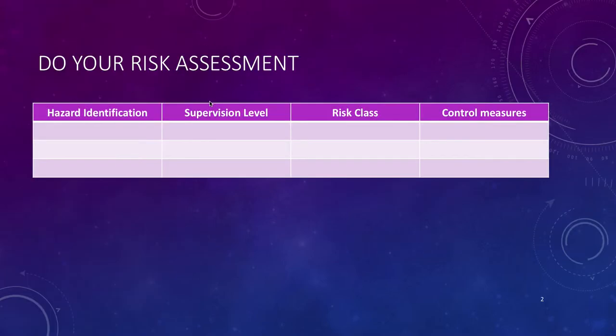Make sure you do your hazard identification, what supervision level you will need, what is the level of risk—high, low or medium—and then what control measures you can put in place to try and reduce or control those hazards.